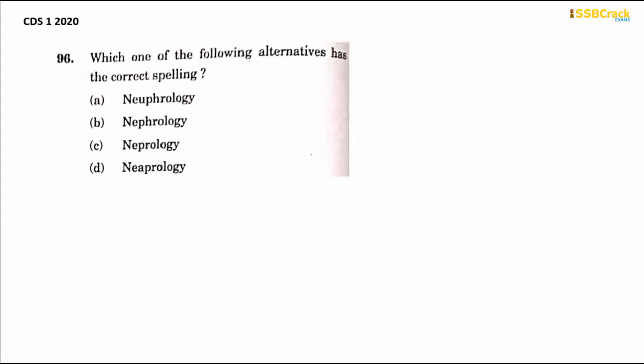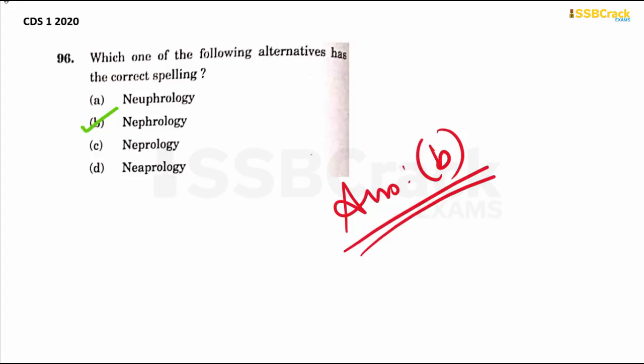The next word is 'nephrology' — N-E-P-H-R-O-L-O-G-Y. Option B is your right answer. Nephrology is basically the study of kidneys and the diseases and health issues connected with the kidneys.